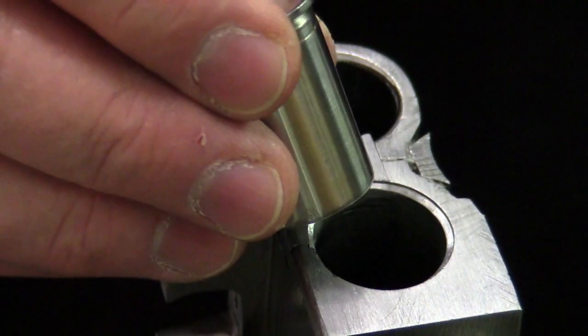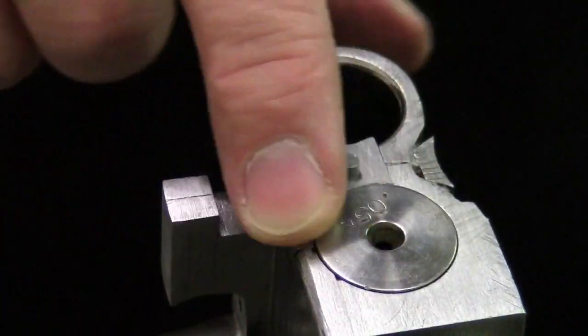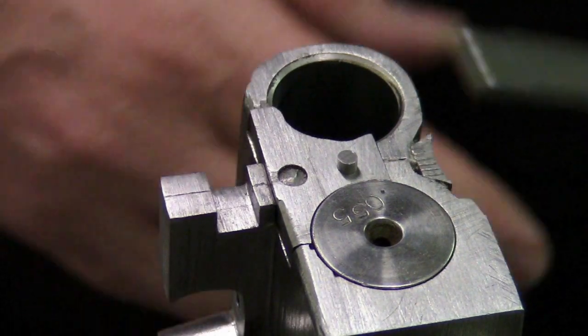The final headspace dimension is reamed after the extractor tail and guide are silver soldered to the extractor.